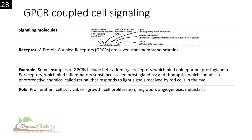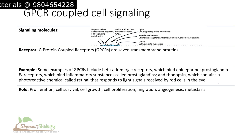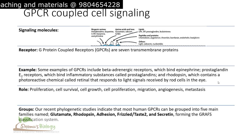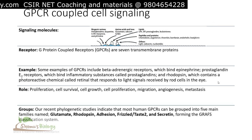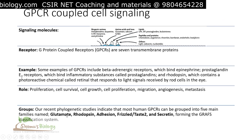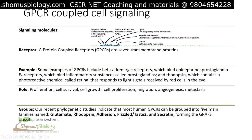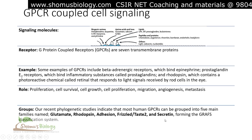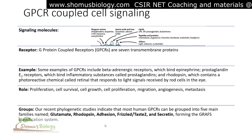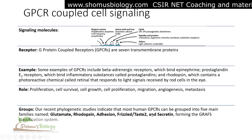The roles of GPCR signaling include proliferation, cell survival, cell growth, migration, and angiogenesis, and it can lead to metastasis. Recent phylogenetic studies indicate most human GPCRs can be grouped into five main families: the glutamate family, rhodopsin family, adhesion family, frizzled/taste2 family, and secretin family — forming the GRAFS classification system.